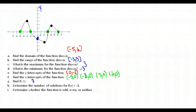Determine the number of solutions for which f(x) equals negative one. Remember, f(x) is the same as y, so how many times do we have a point where y equals negative one? Looking at where y equals negative one on the graph, there are two points where y is negative one. So there are two solutions where f(x) equals negative one.